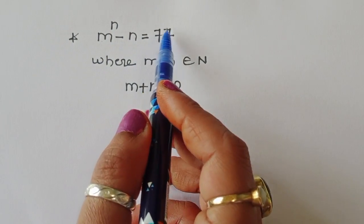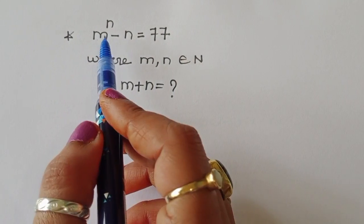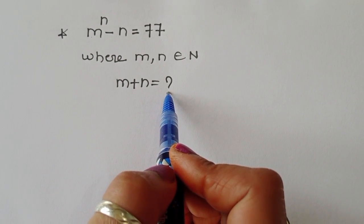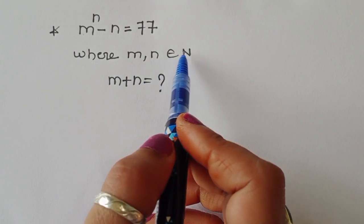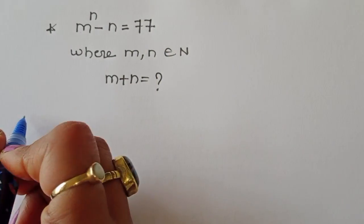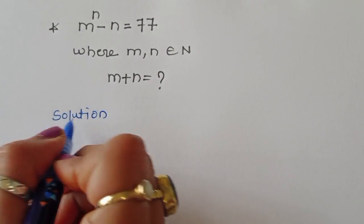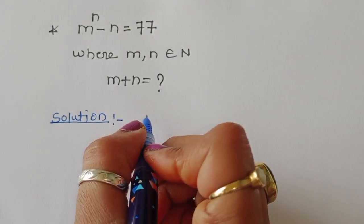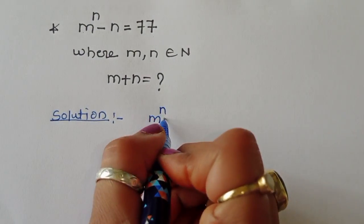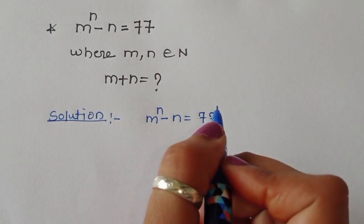m power n minus n is equal to 77, and we have to find out the value of m plus n. There is one condition given: m and n belong to the natural numbers. So how can we find out the value of m plus n? Let's see the solution. m power n minus n is equal to 77 — this is given.